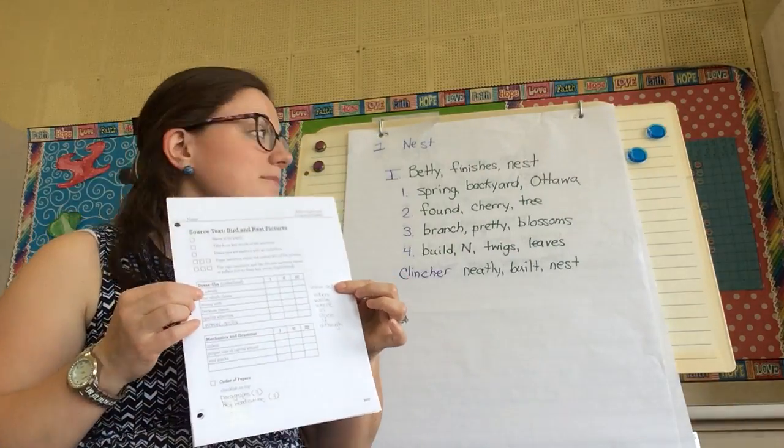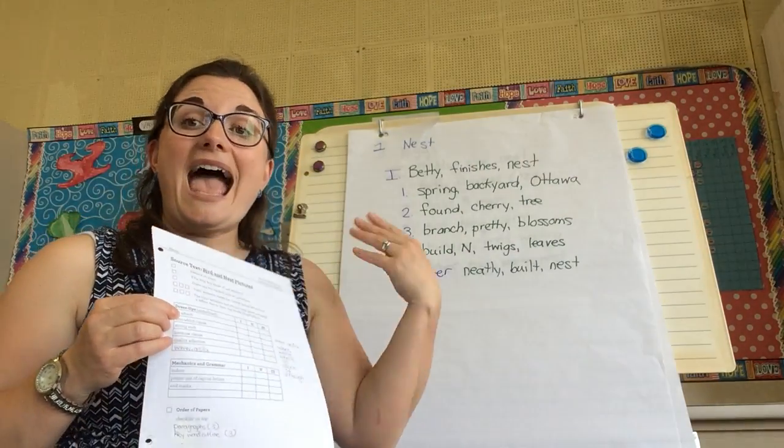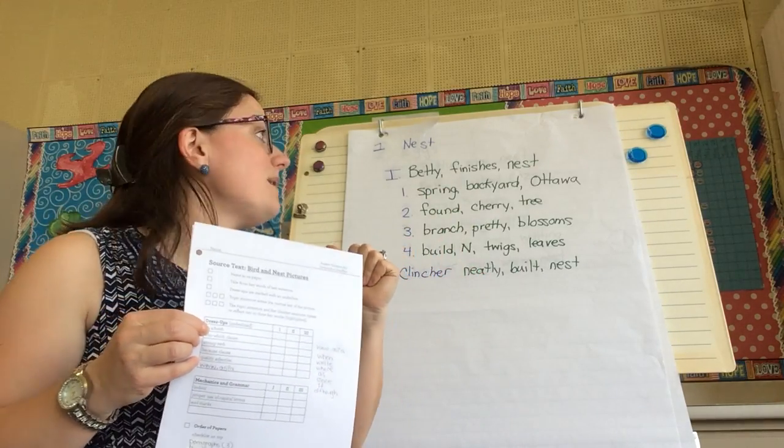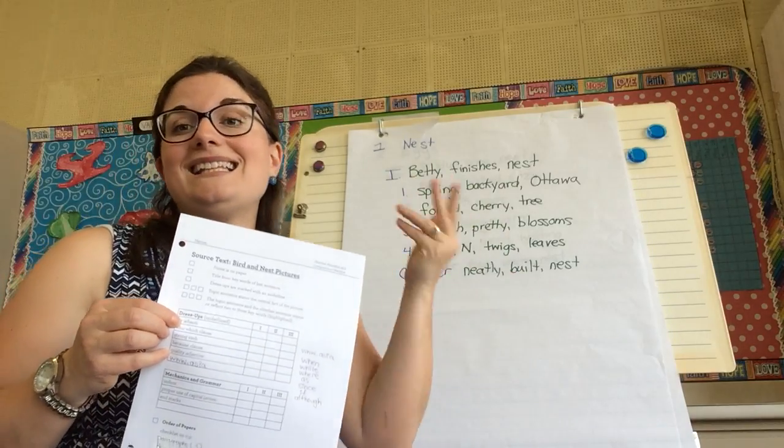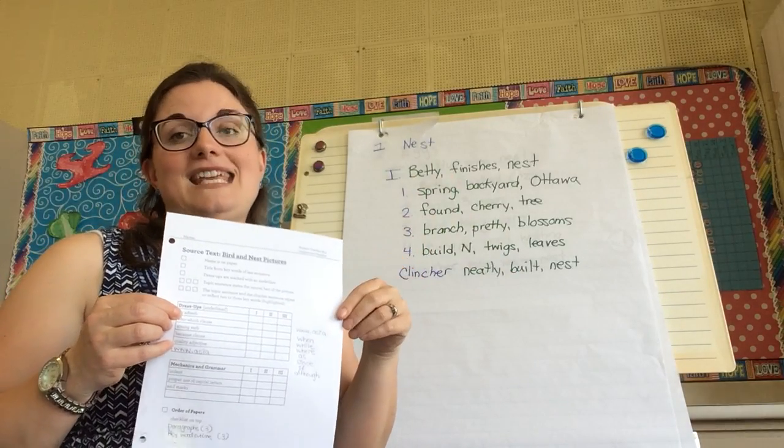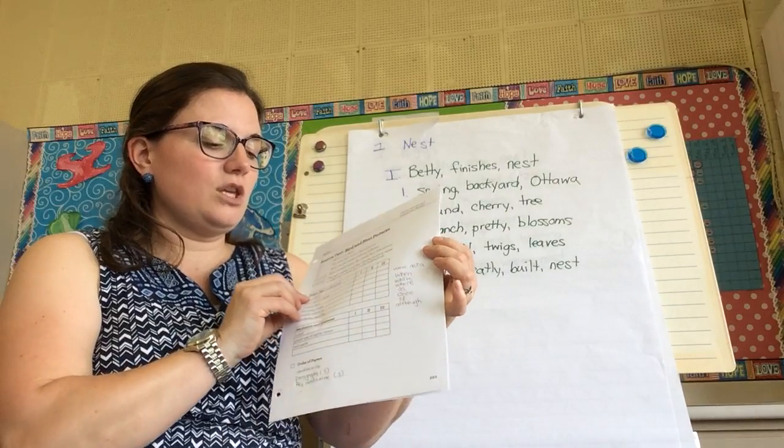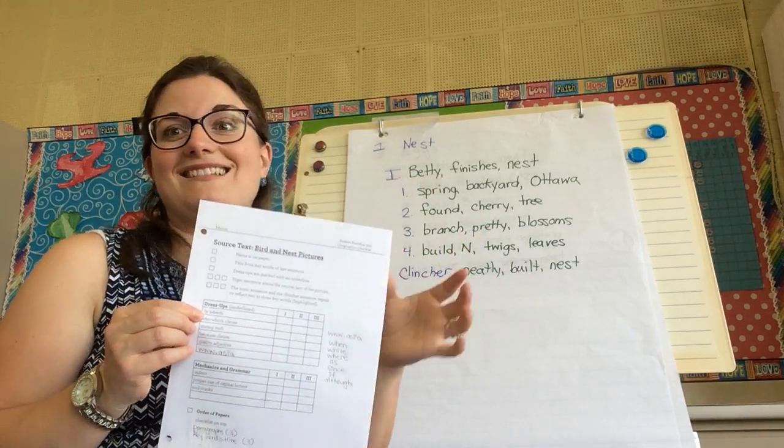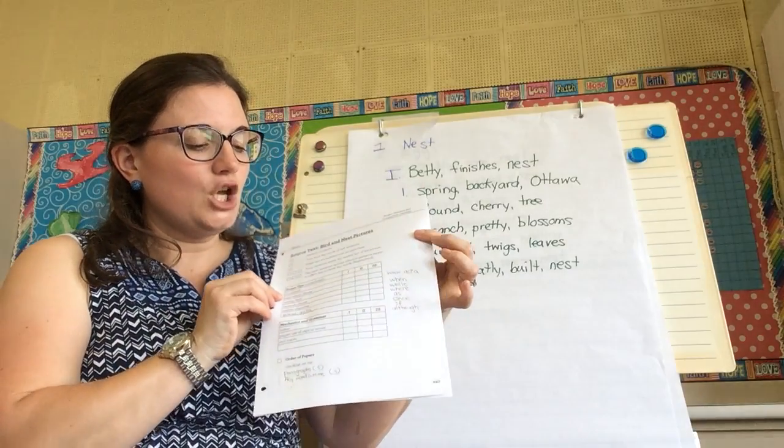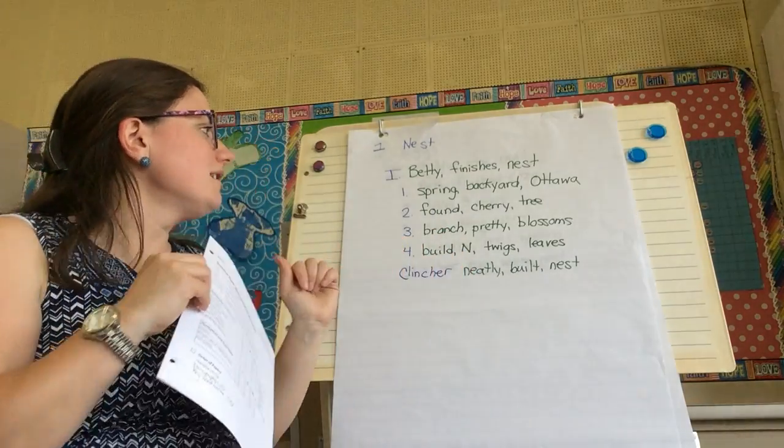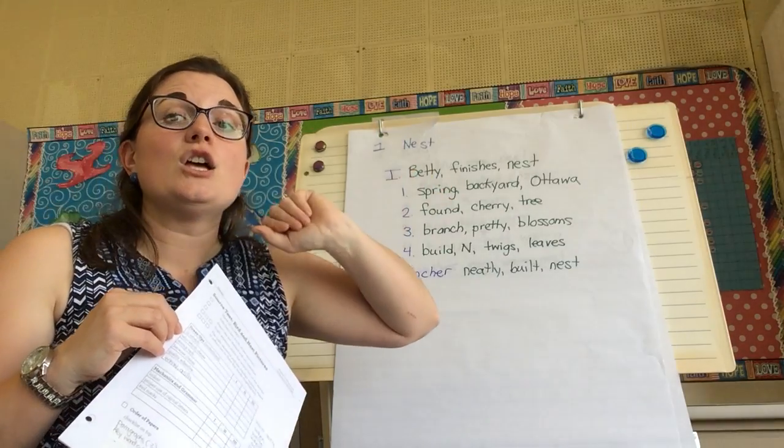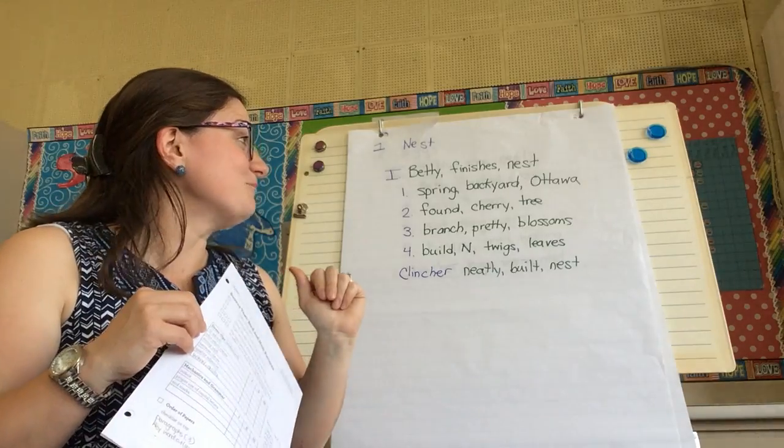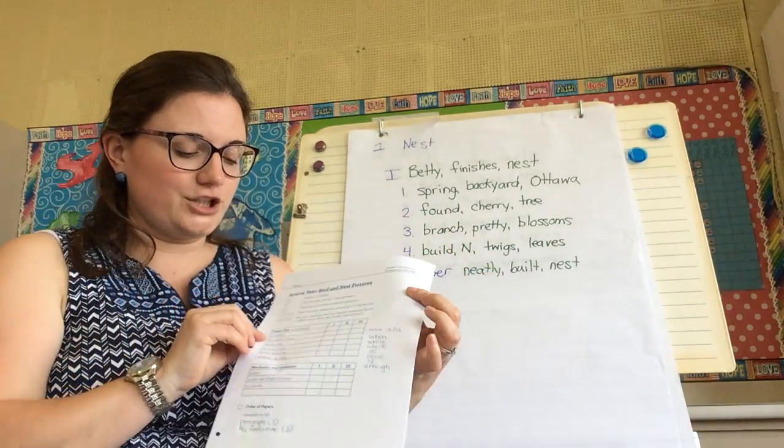L-Y adverb. So we can talk about how did the bird build the nest. Well I actually had one down here I said neatly. Maybe you say Betty quickly made the nest. So you want to think of cleverly, quietly however you want to describe. Who which. I could say Betty, who was a blue jay, built a nest. Right? Maybe I wanted to say what kind of bird she is.